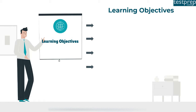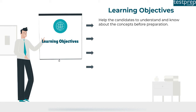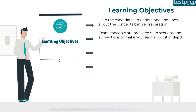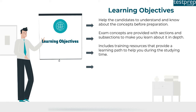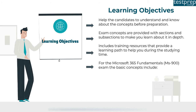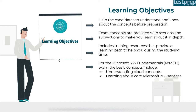Microsoft provides learning exam objectives to help candidates understand concepts before preparation. These are provided with sections and subsections for in-depth learning. The MS-900 exam includes training resources with a learning path. The basic concepts include: first, understanding cloud concepts; second, learning about core Microsoft 365 services.